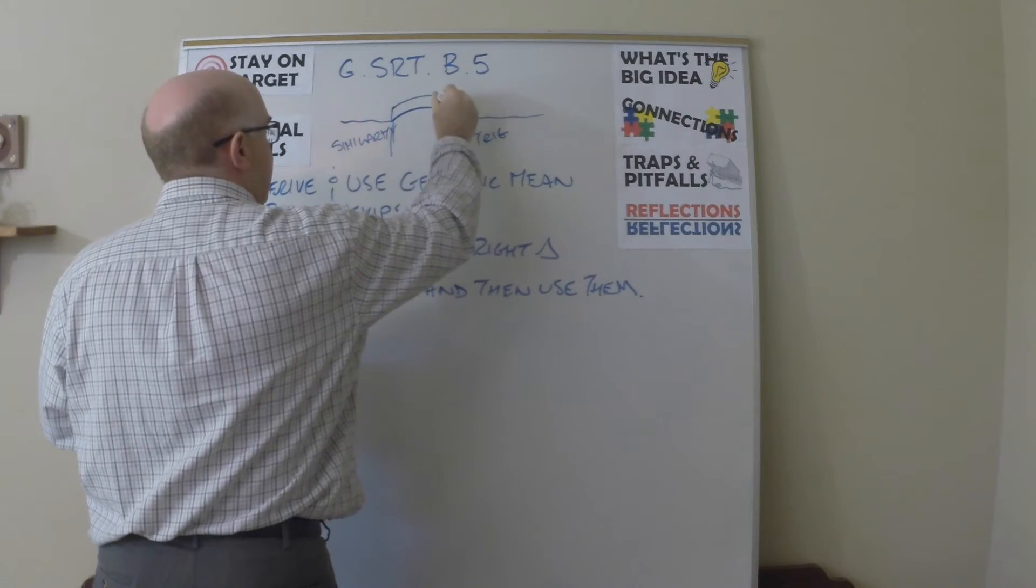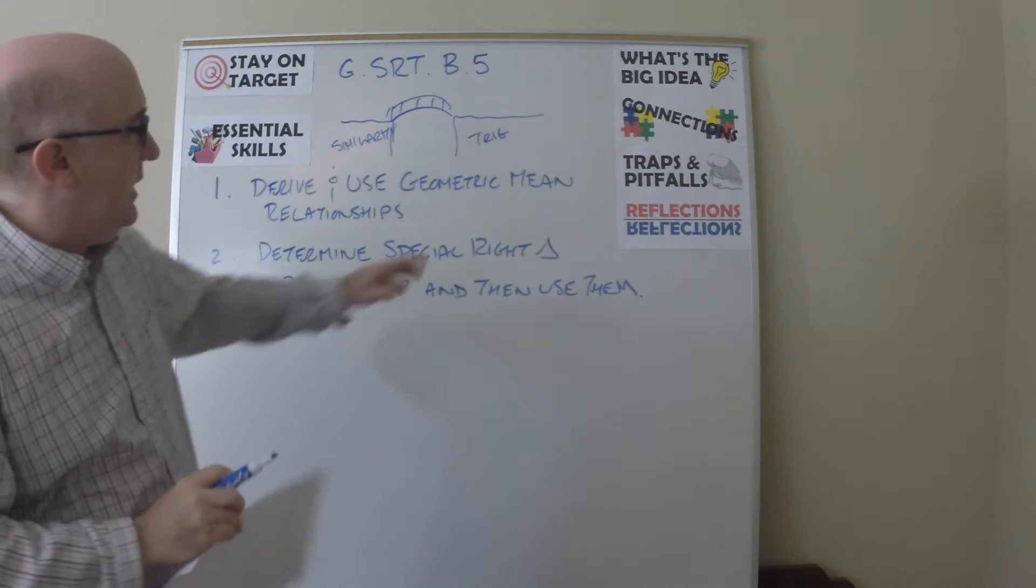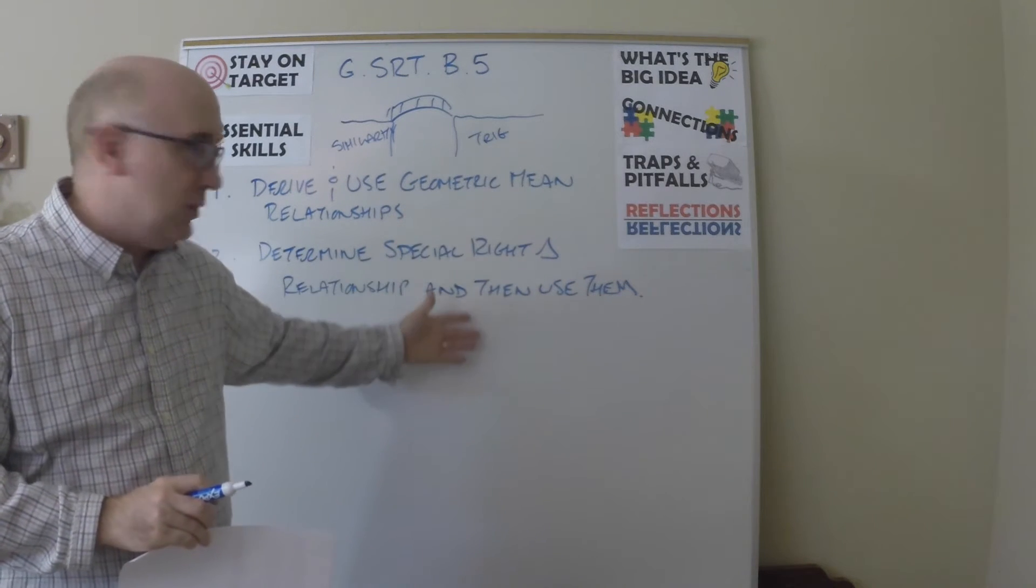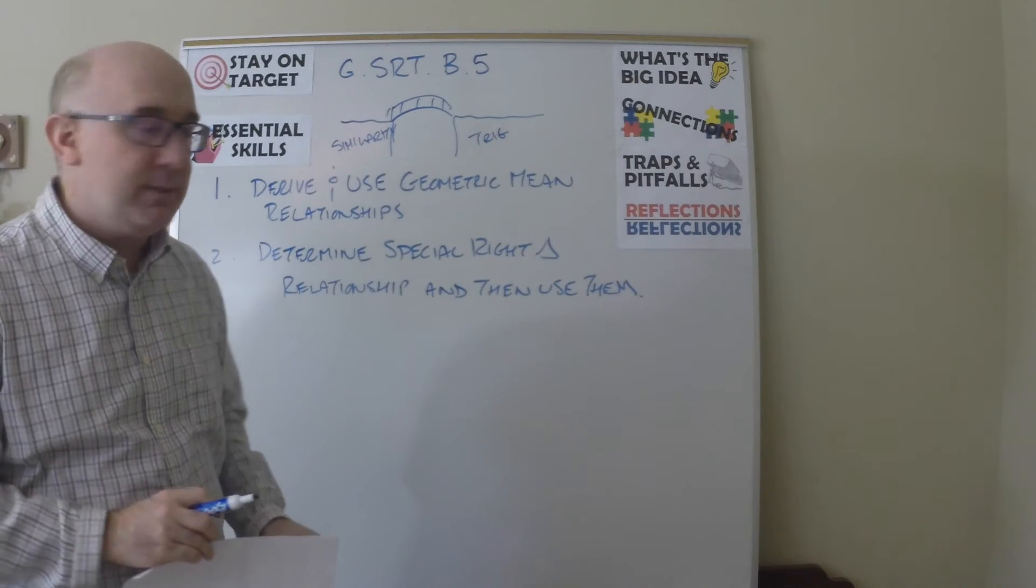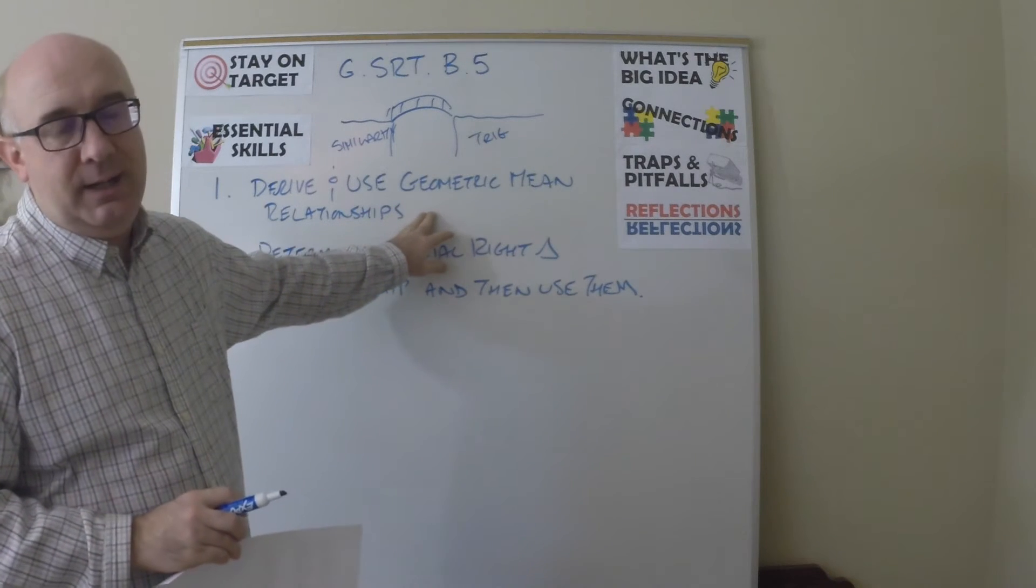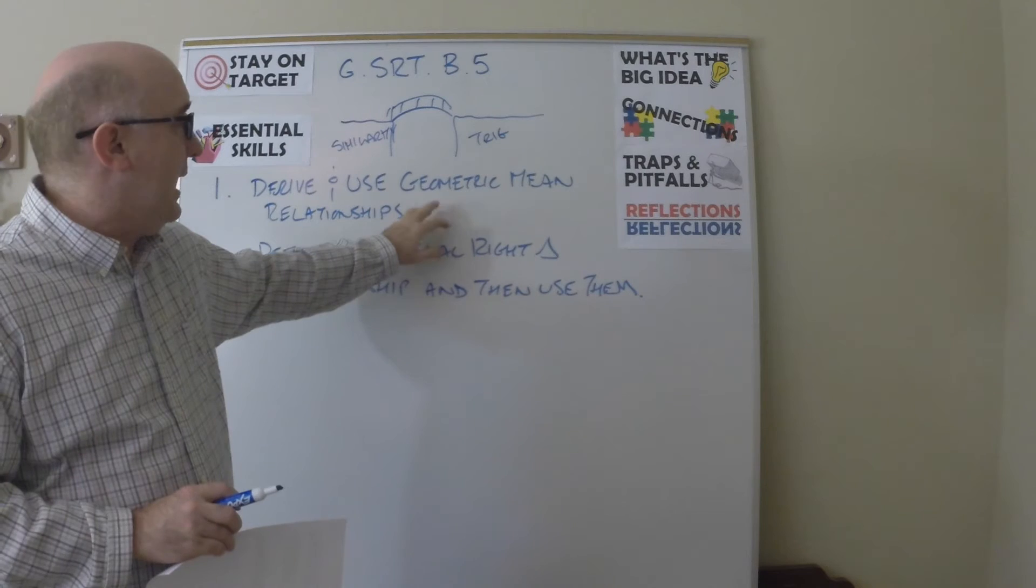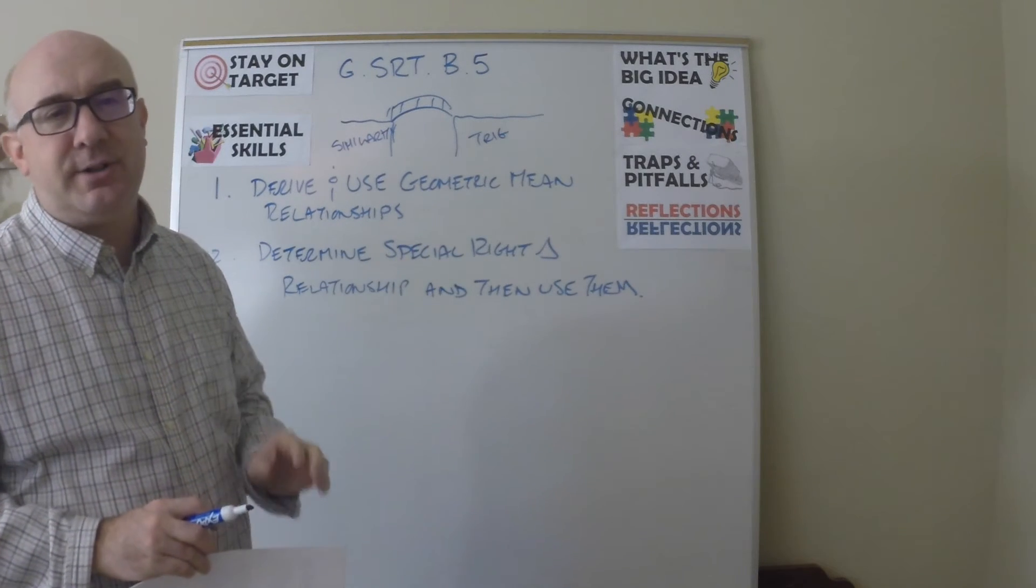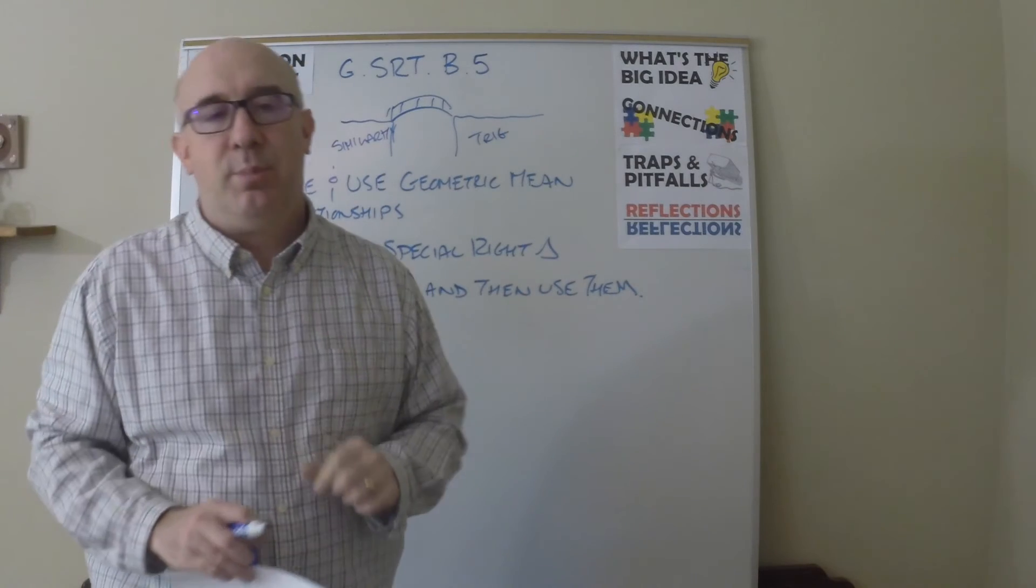And so the bridge that we have are these nice uses of the geometric mean and also the special right triangles. Now the geometric mean is not an essential item, but it has some nice little application to it. Special right triangles, on the other hand, are a huge and important topic.